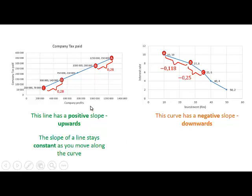What is also noticeable is that the slope of the line stays constant as you move along the line. When you move from one point to the next point, the slope stays exactly the same because it is a straight line.